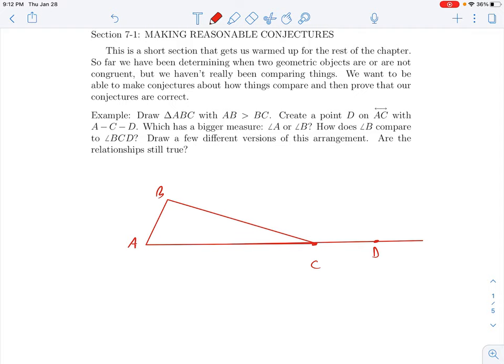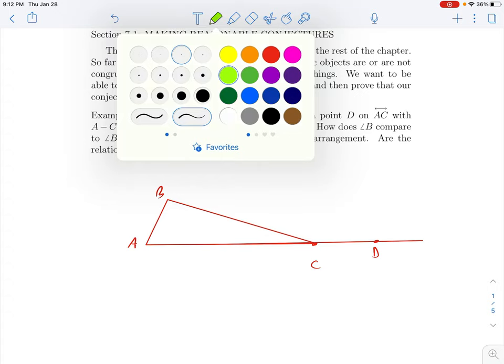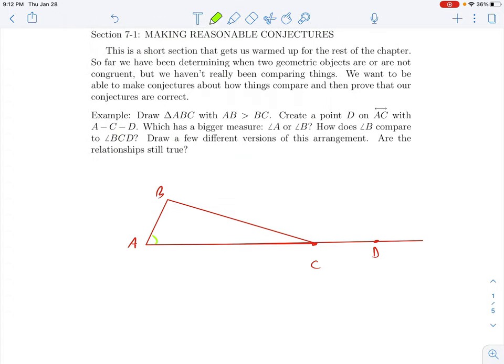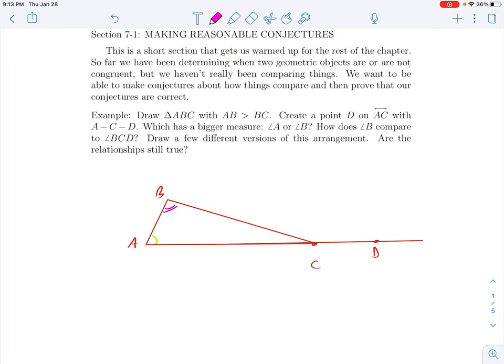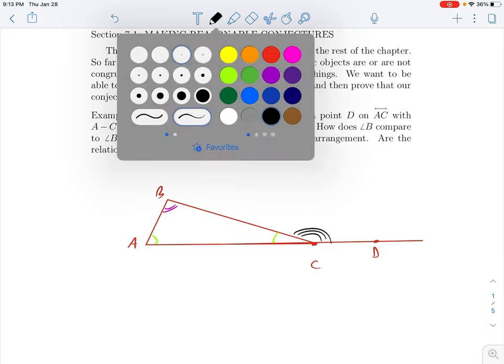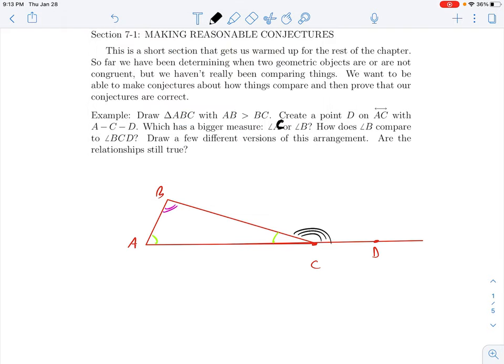So I'll move this out of the way. And the idea is we're going to keep this line going. So D is somewhere out here on the same line, but past C. C is between A and D. So there are things that we can start to compare. I can look at angle C versus angle B. Let's compare angle C to angle B.